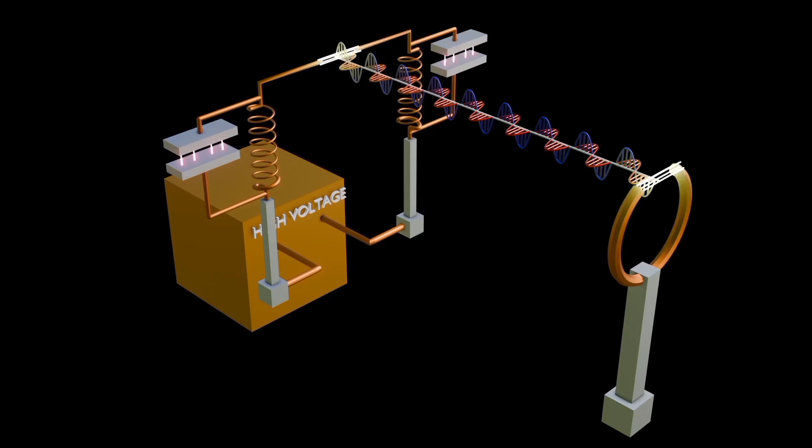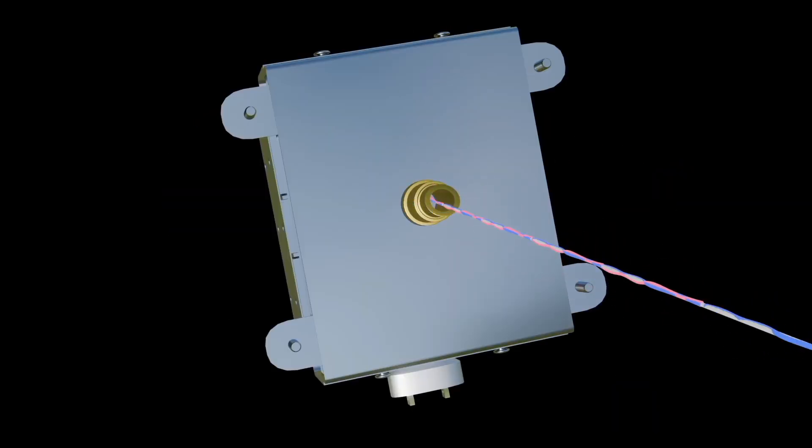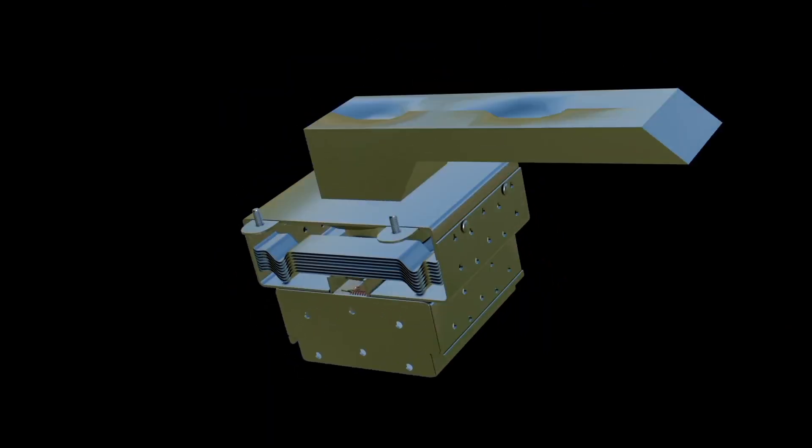A magnetron is a device used to produce microwaves. The magnetron contains a waveguide, antenna, ceramic insulation.